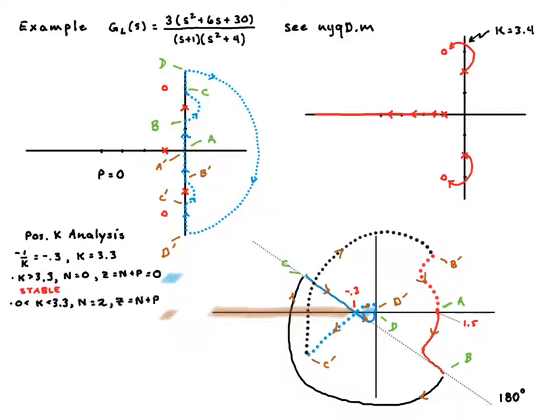Now let's look at small values of K. K less than 3.3. Now we have two encirclements, positive encirclements. So we have two right half plane poles. That's exactly what we see right there for small values of K, K less than 3.3. It's actually 3.4. As I say, this number was just an approximation, just sort of snatched it off the plot.